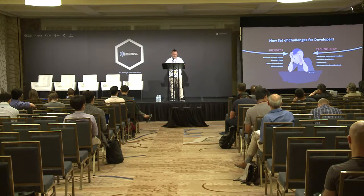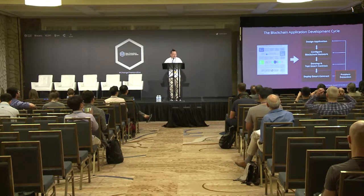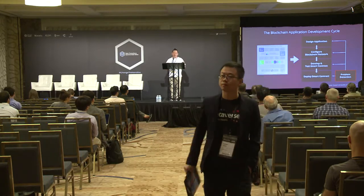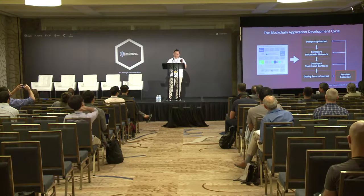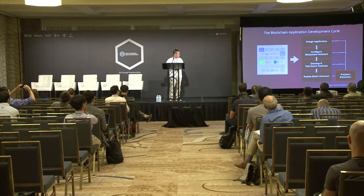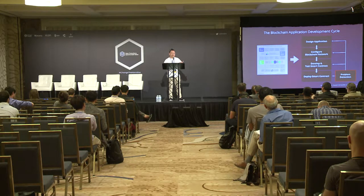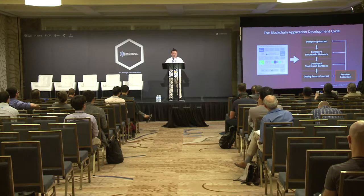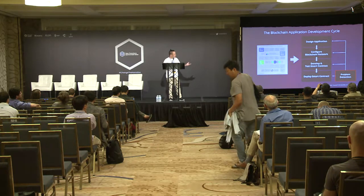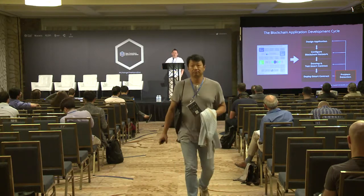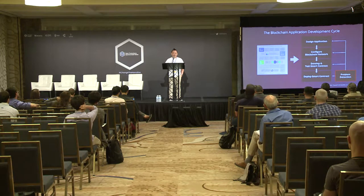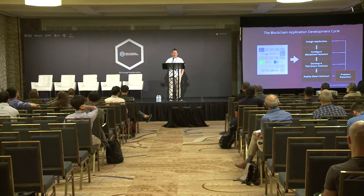My answer is yes — if you want to make blockchain software, you need to follow a lot of steps. There are 18 steps, but let's simplify into four steps. First, you need to design an application and decide how to use a blockchain. Second, configure the blockchain — find an existing one or build your own. Third, develop and test your application. And last, deploy your application to the public so you can earn money.